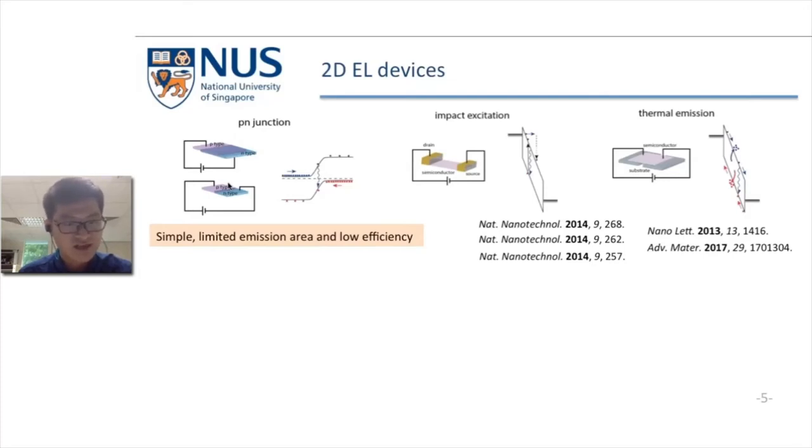However, the light emission in these devices is typically limited to the junction area. The emission area is spatially confined. Planar emission is important for real applications.